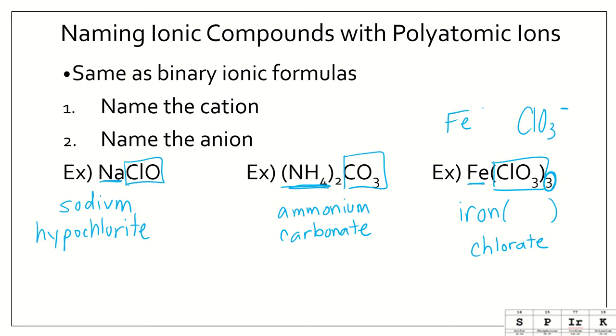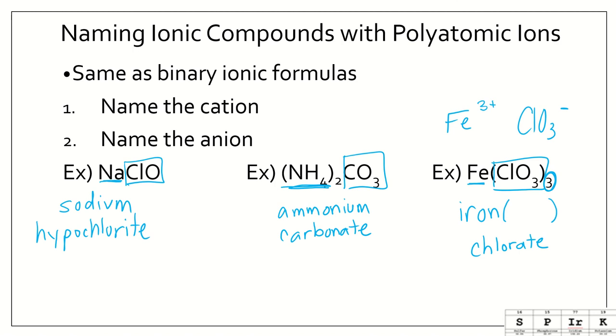And if there are 3 of them, then that must mean we have iron 3. So 1, 2, 3. Iron 3, chlorate.